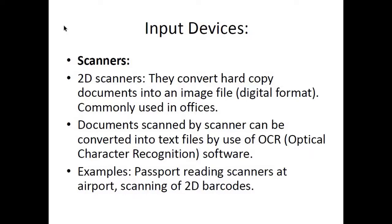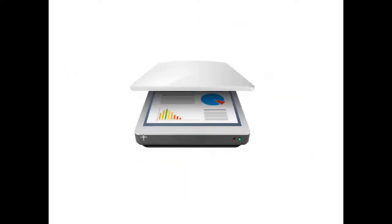There are two types of scanner. The first type is 2D scanners — they convert hard copy documents into an image file or into digital format. They are commonly used in offices. Documents scanned by a scanner can be converted into editable text files using OCR (Optical Character Recognition) software. Examples include passport reading scanners at airports and 2D barcode scanners at supermarkets.